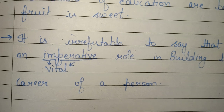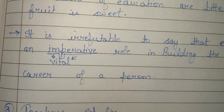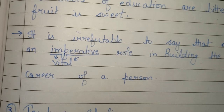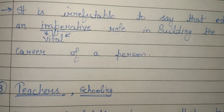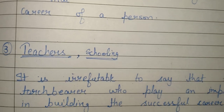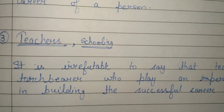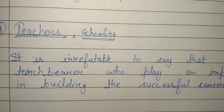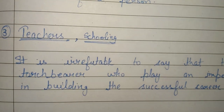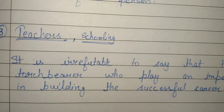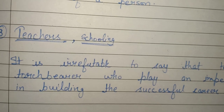The remaining topics will be covered in future videos with regular updates on hook lines, band 7 plus templates. For the topic of teachers or schooling, the hook line is: 'It is irrefutable to say that teachers are torch bearers who play an imperative role in building the successful career of a person.' This is a very important and crucial hook line for the teachers or schooling topic.